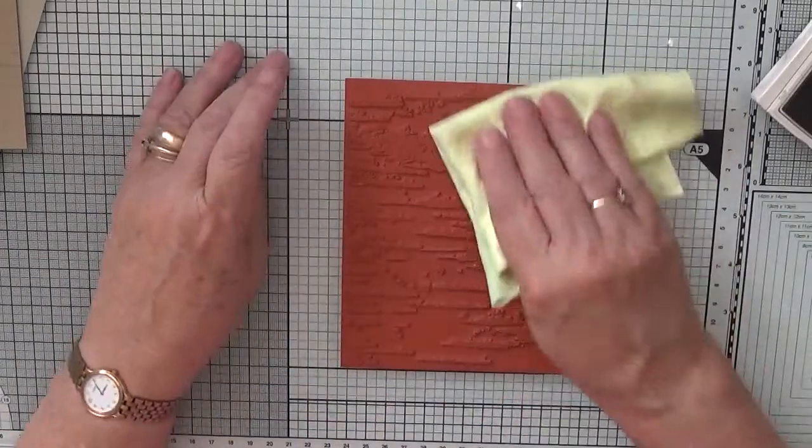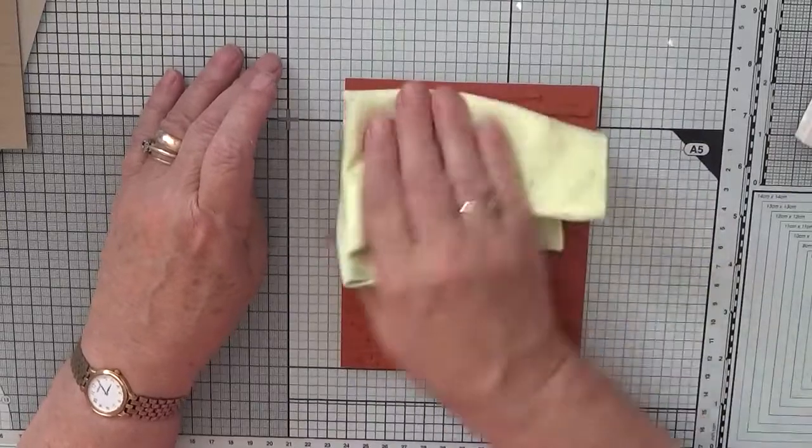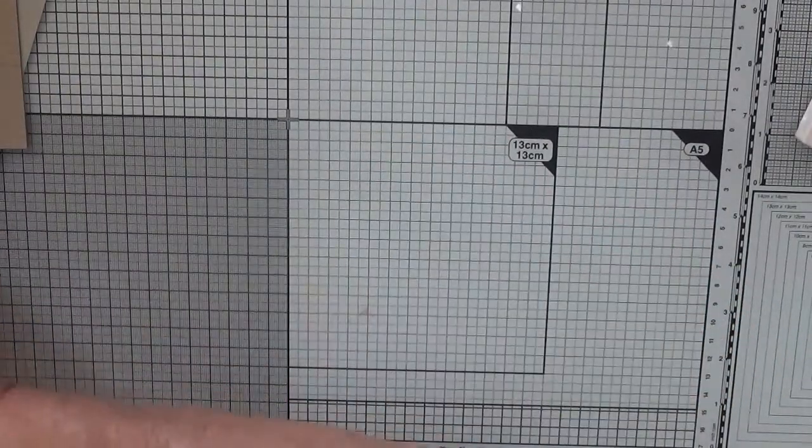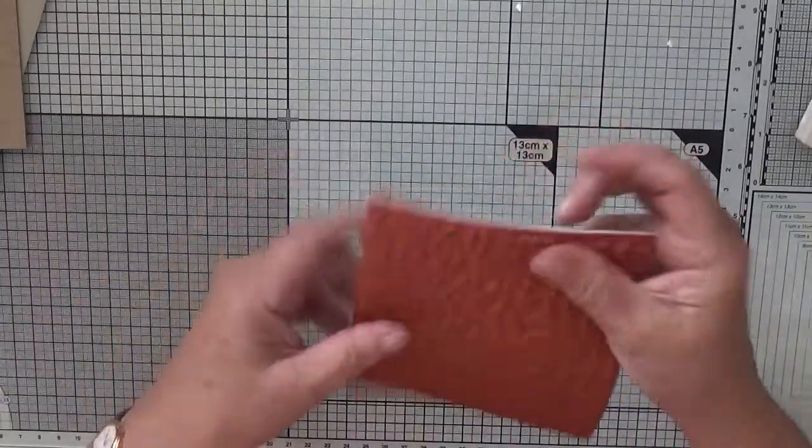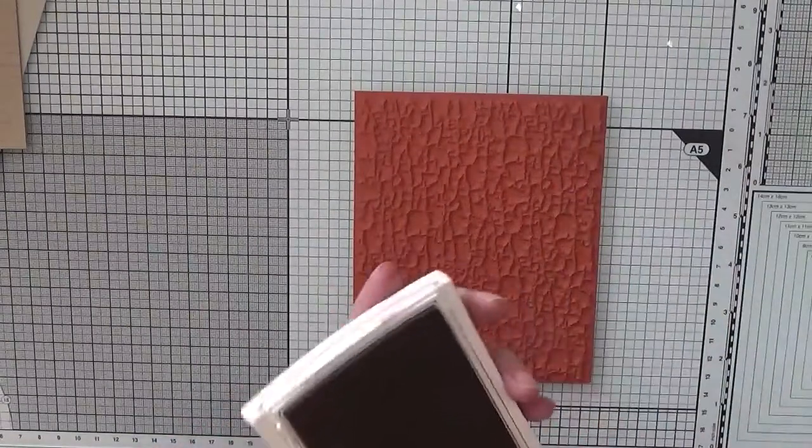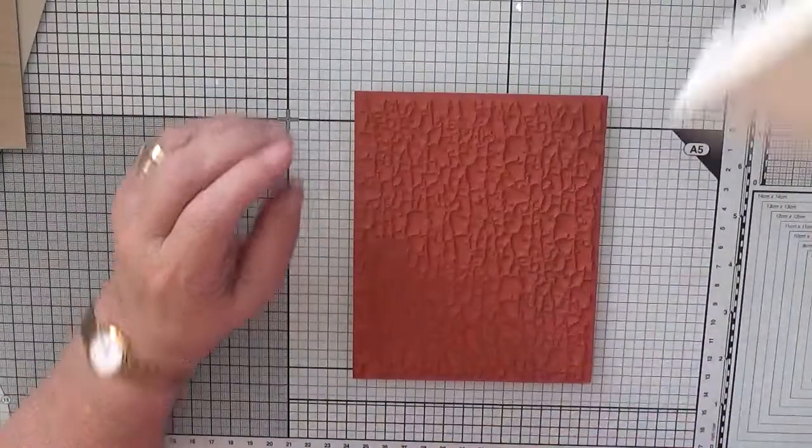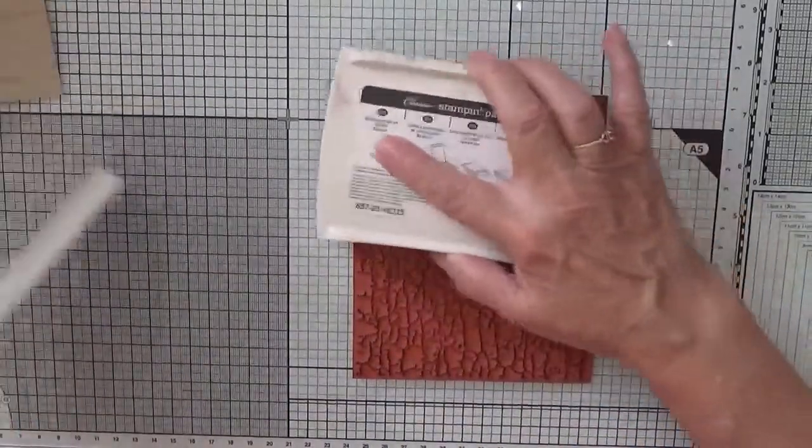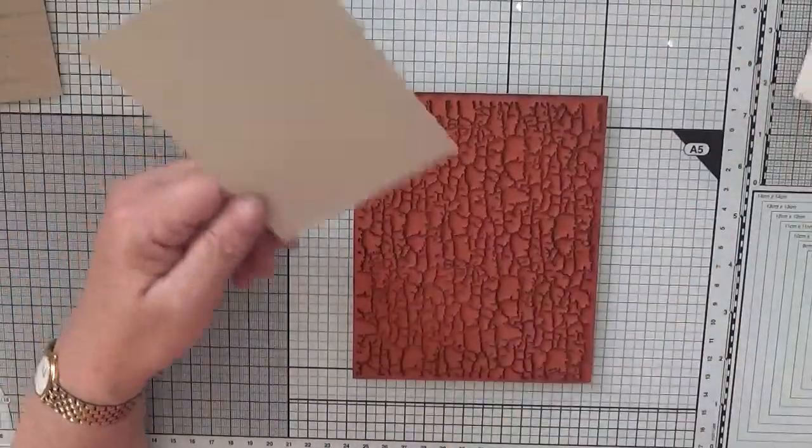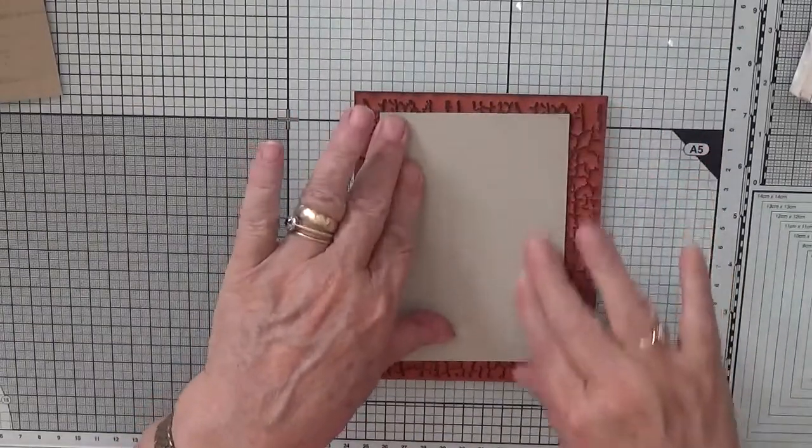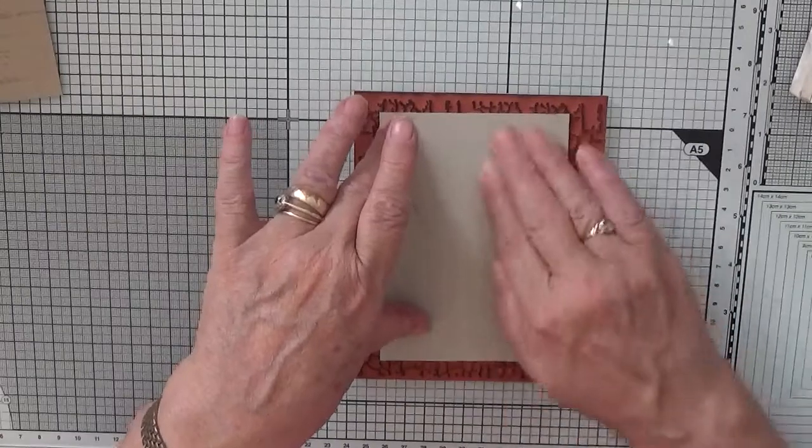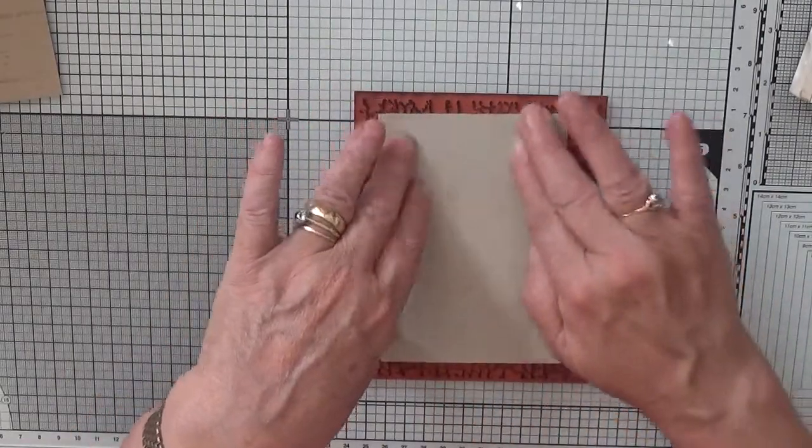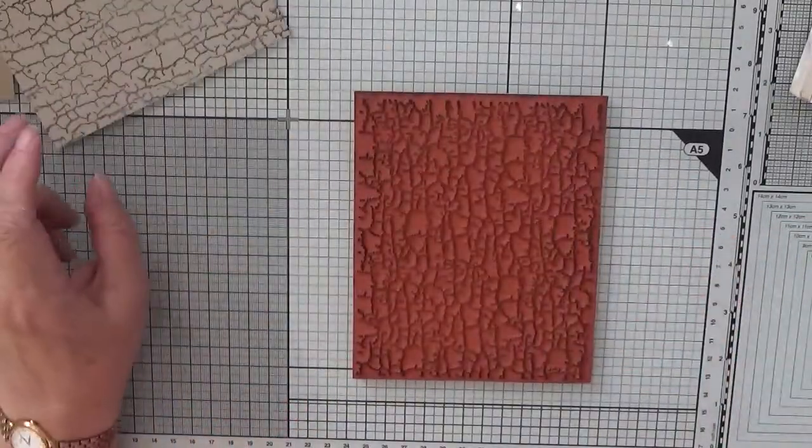So you don't need to use blocks when you've got a glass mat for the big stamps. And then we'll get our crackle paint. Crackle paint is cool. Ink that up and pop our Sahara sand on it and rub it all over. That looks good.